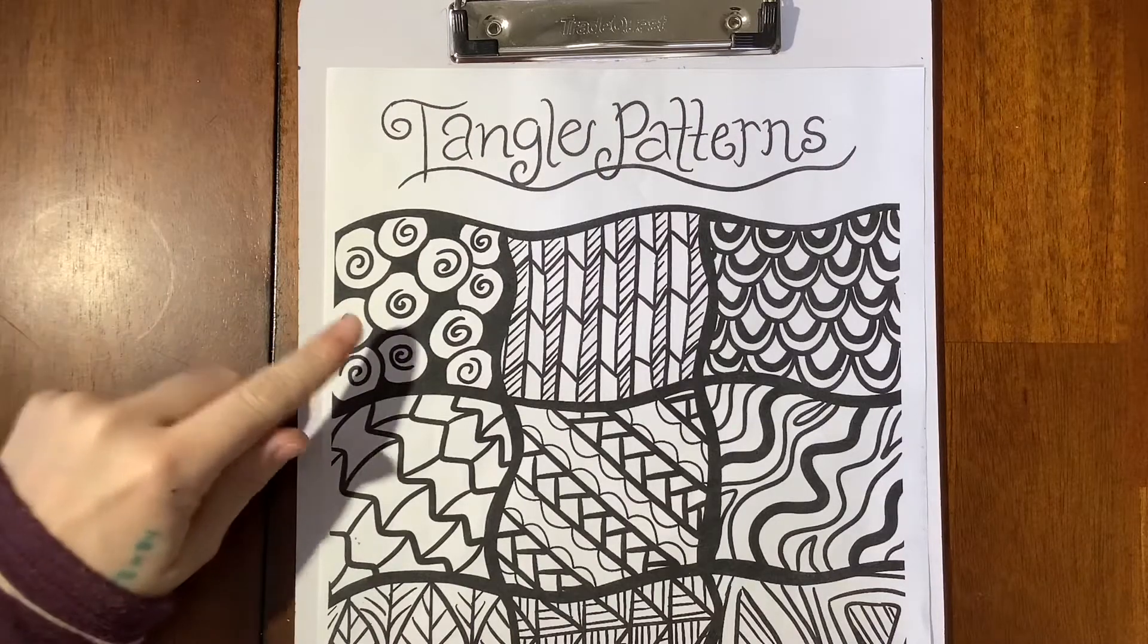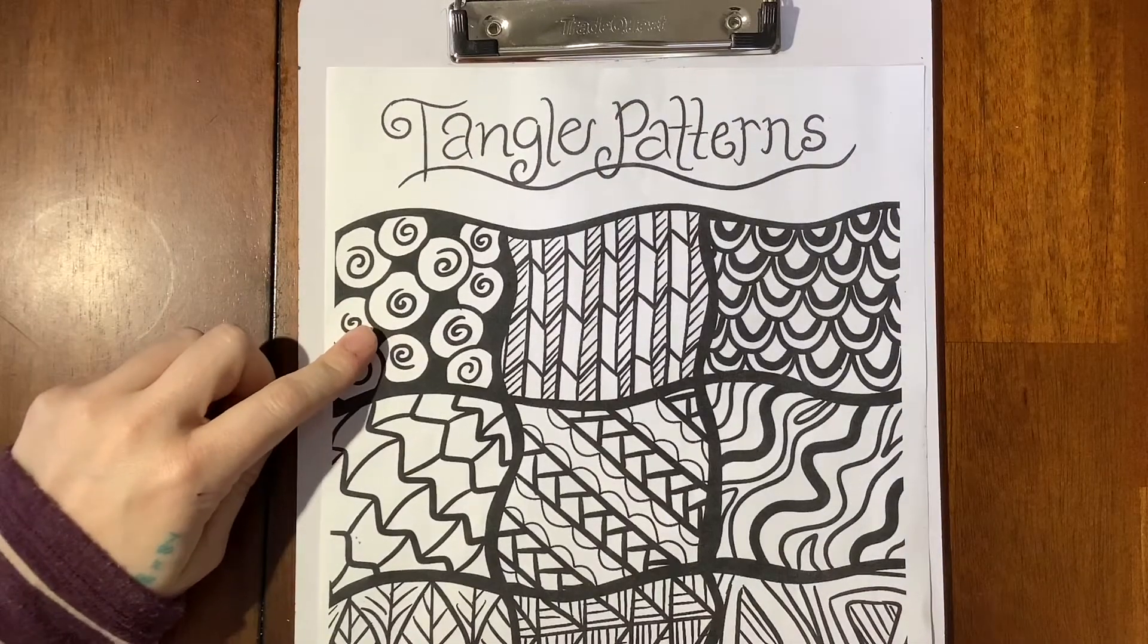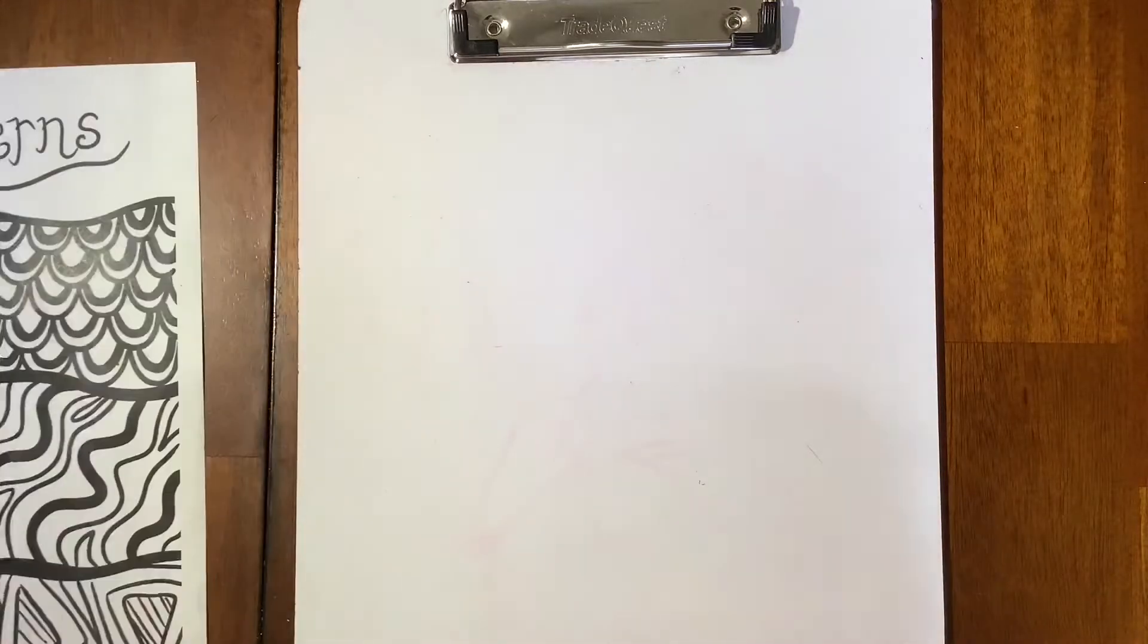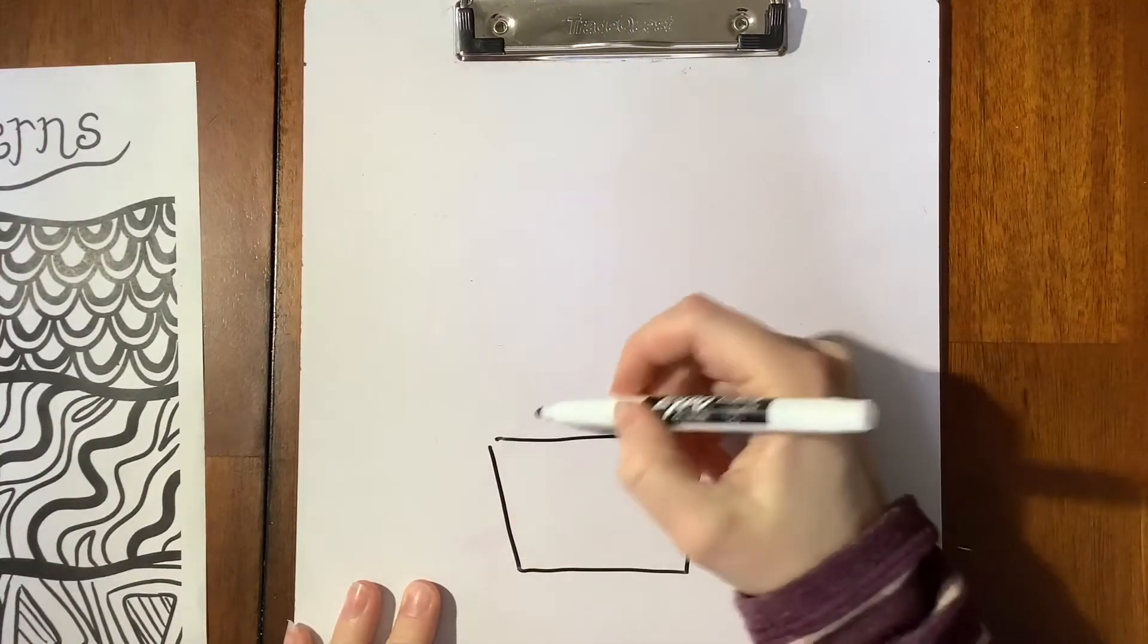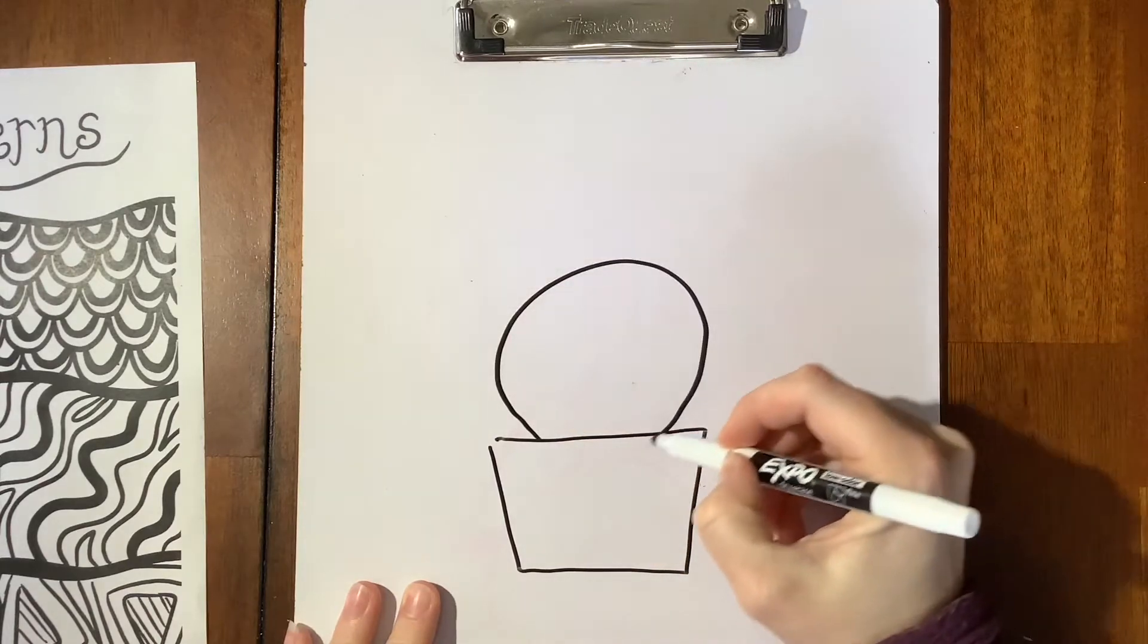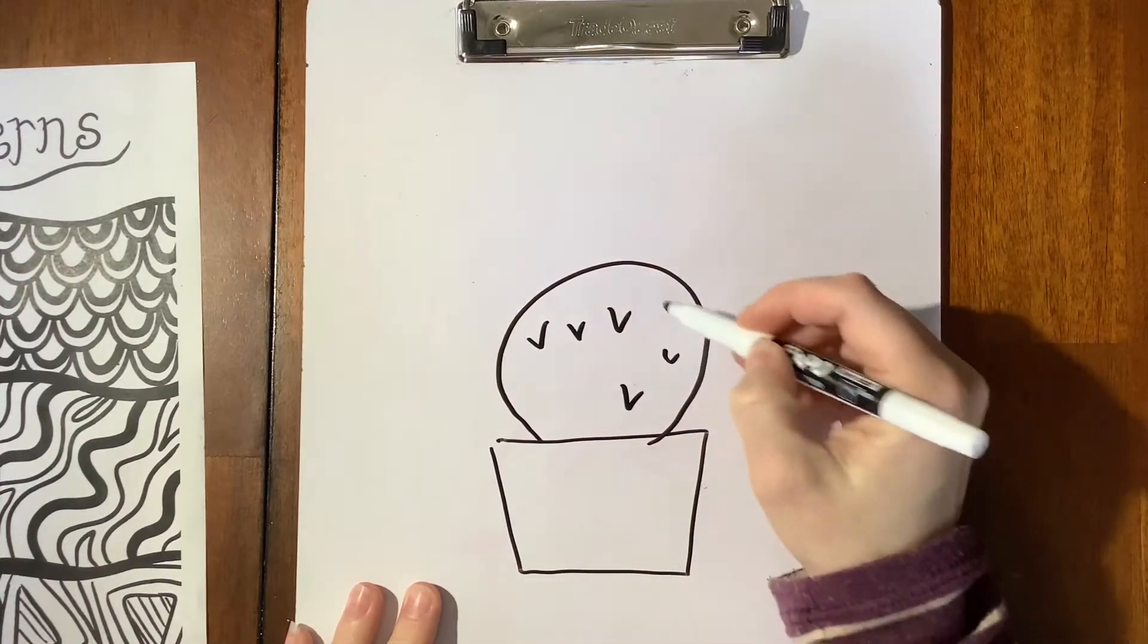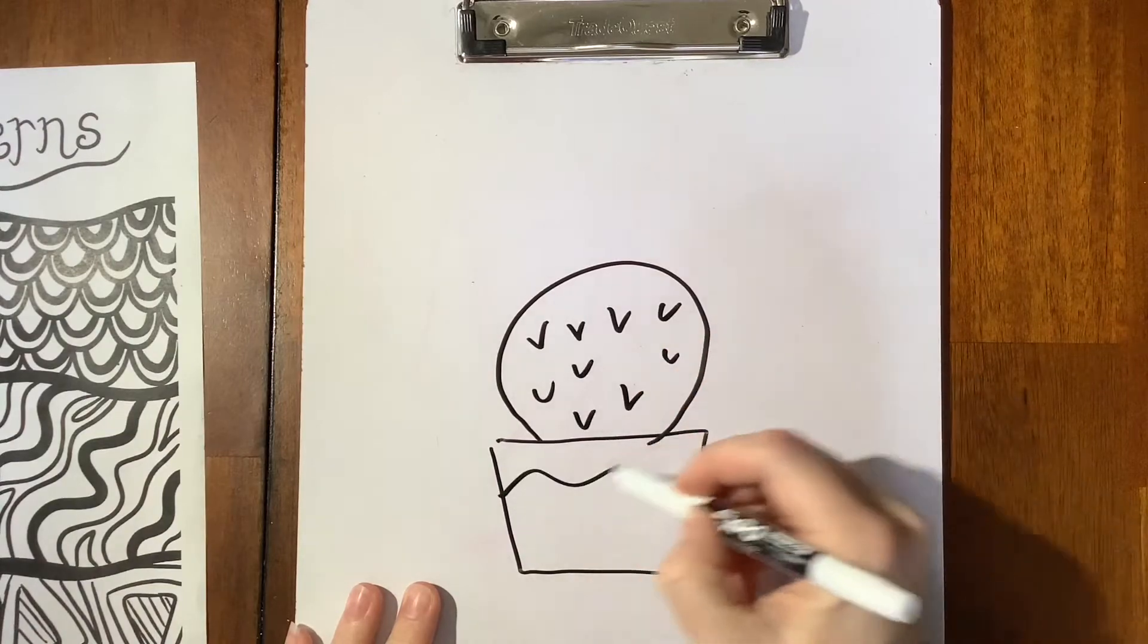The next tangle pattern I'm going to do is called cinnamon buns. So as you are working on your cactus, you have your pot, you have your cactus, and your little designs, however you decided to do those.